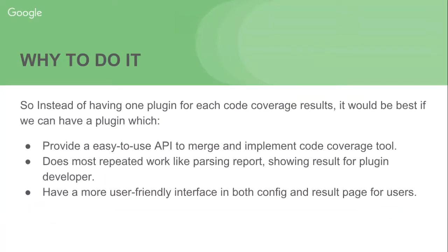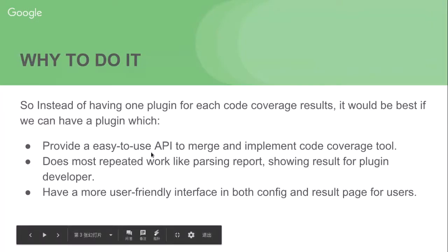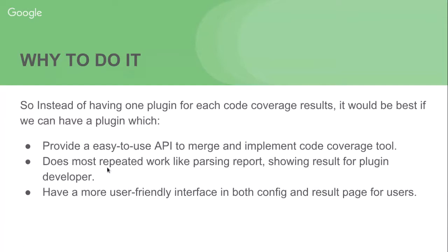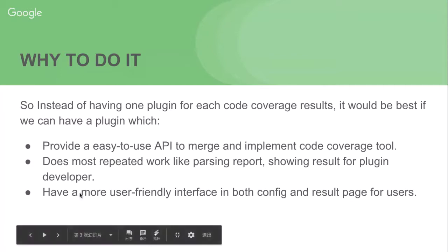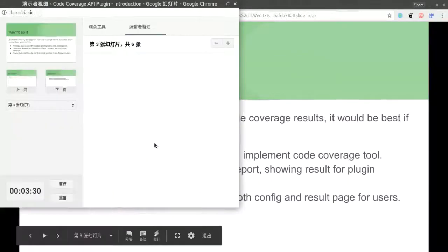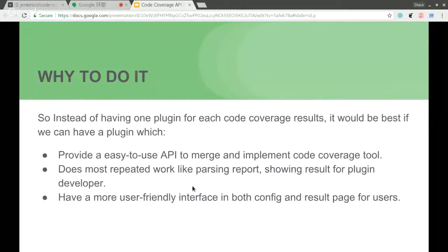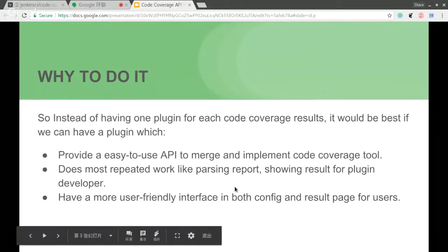Instead of having one plugin for each code coverage tool, it would be best if we can have a single plugin that provides: first, an easy-to-use API to measure and implement a code coverage tool; second, handles most repeated work like parsing reports and showing results for plugin developers; and third, provides a more user-friendly interface in both the config and result pages for users.